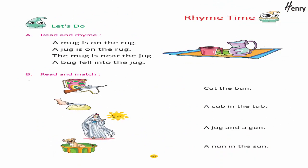Rhyme time — let's do. Read and rhyme: A mug is on the rug. A jug is on the rug. The mug is near the jug. A bug fell into the jug.